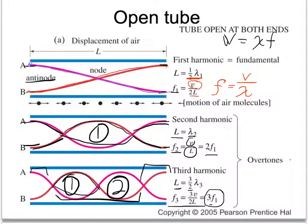Some things you'll be expected to do: knowing what harmonic you're on and the length of a pipe, you might be asked to calculate the wavelength of the wave, or given the wavelength and the harmonic, find the length of the pipe. Every time we add half a wavelength — on the first harmonic we've got one half, on the second we've got a full wavelength, on the third we add another half — every harmonic on a tube open at both ends adds half a wavelength.